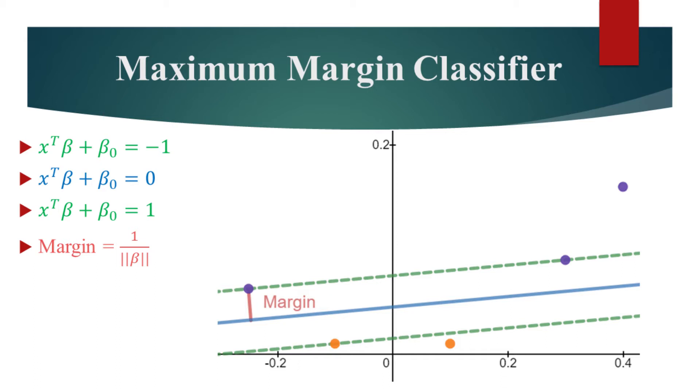For this data, the blue decision boundary is best because it has the highest margin of separation.